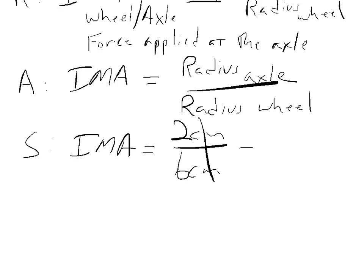The centimeter units cancel. 2 divided by 6 equals approximately 0.33, so the IMA of this wheel and axle system — with force applied at the axle — is 0.33. You don't actually gain much advantage when the axle, which has a smaller radius than the wheel, is where the force is being applied.